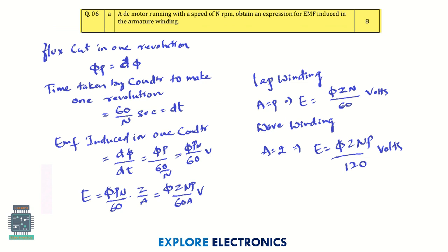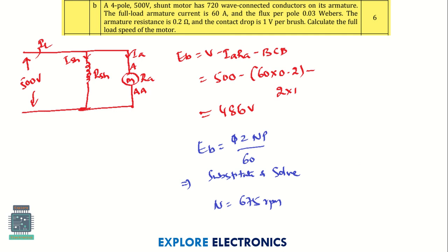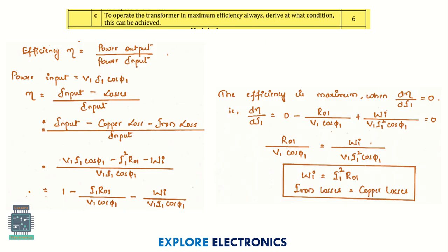Question 6A has a derivation for EMF induced in the armature winding of a DC motor running at a given speed. Question 6B is a problem where you can see the solution — it is a six-mark problem to calculate the full load speed of a motor. Question 6C asks you to derive the condition at which a transformer operates at maximum efficiency.